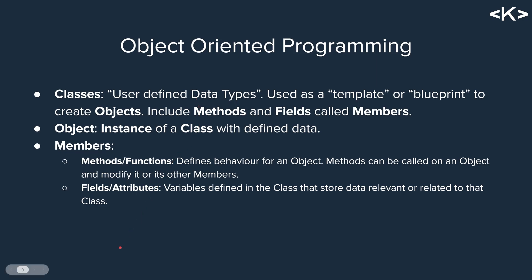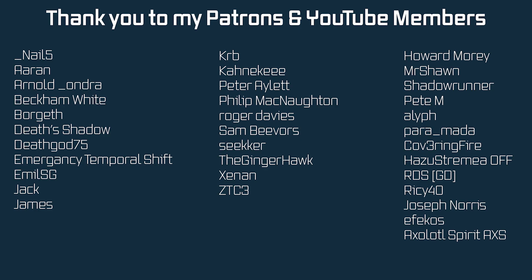To reiterate, the key terms you should familiarize yourself with are: class or classes, object or objects, methods and fields — and those last two are members. We're going to jump right into using all these terms practically in the next tutorials, specifically in the next one where we'll immediately work with classes and objects. Hope to see you there.